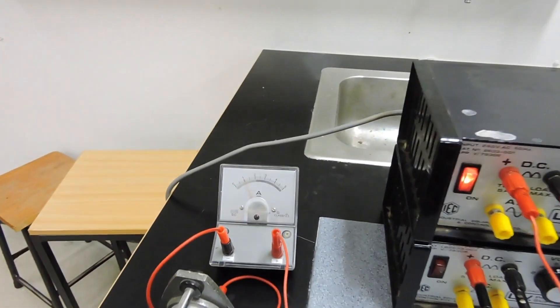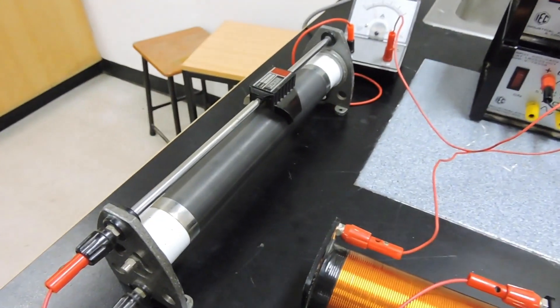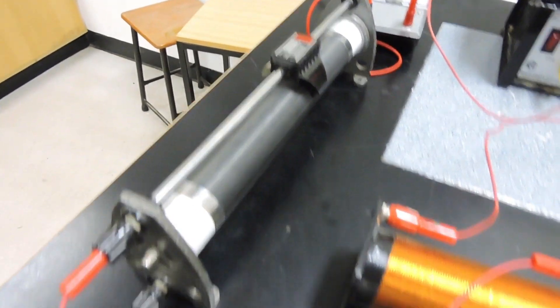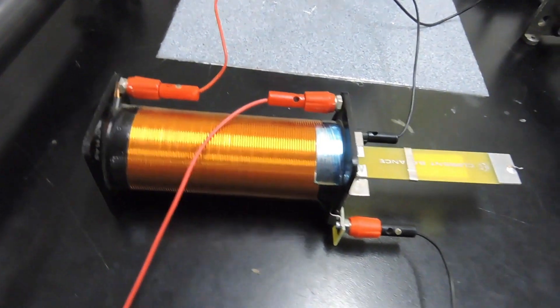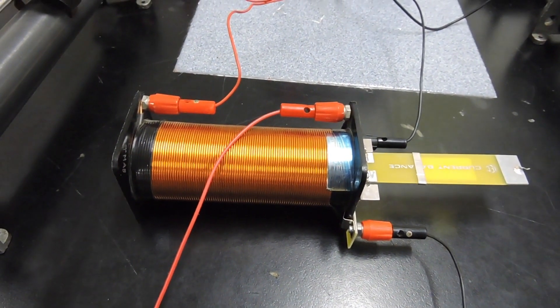I have my ammeter over here, which is currently reading one amp. We have my rheostat, which I can control the amount of current flowing through. And I have my solenoid over here, which is a 710-turn with a length of 14 centimeters.